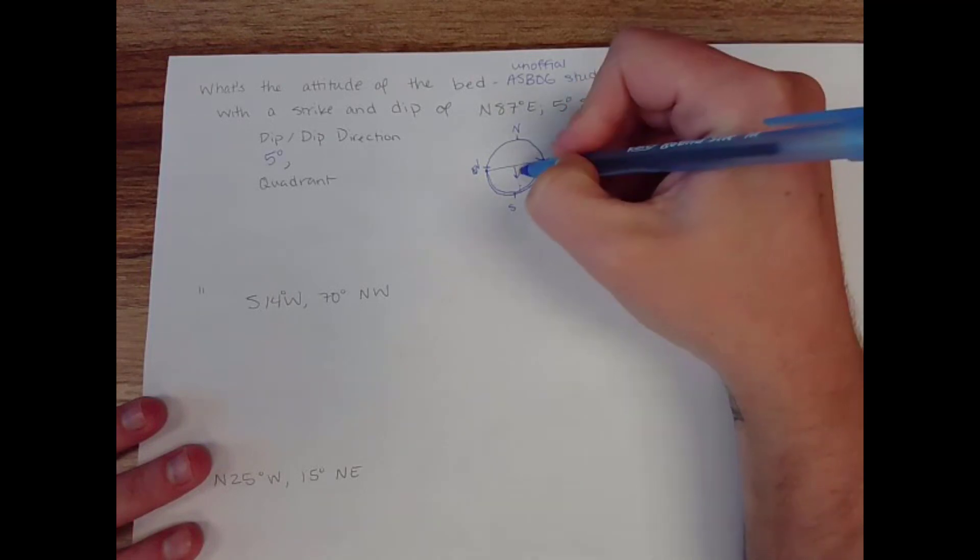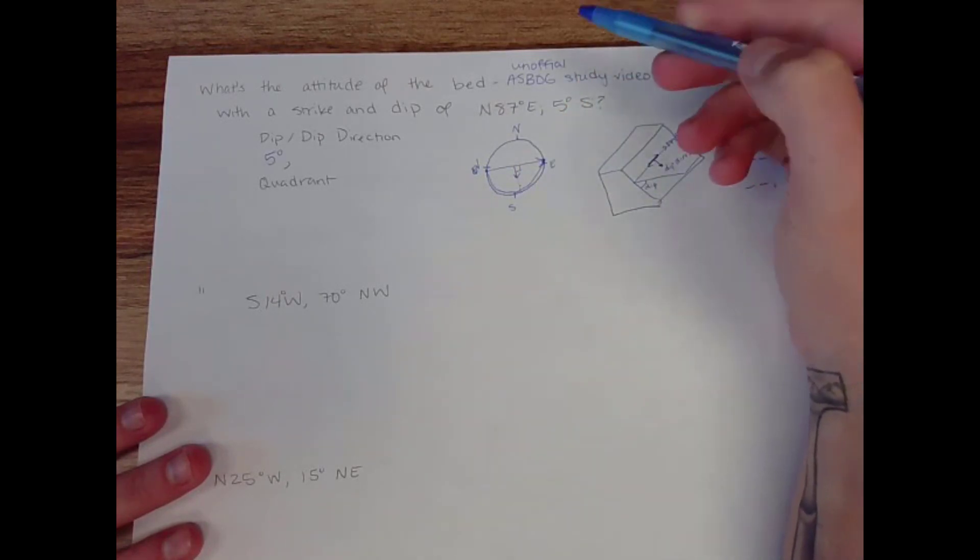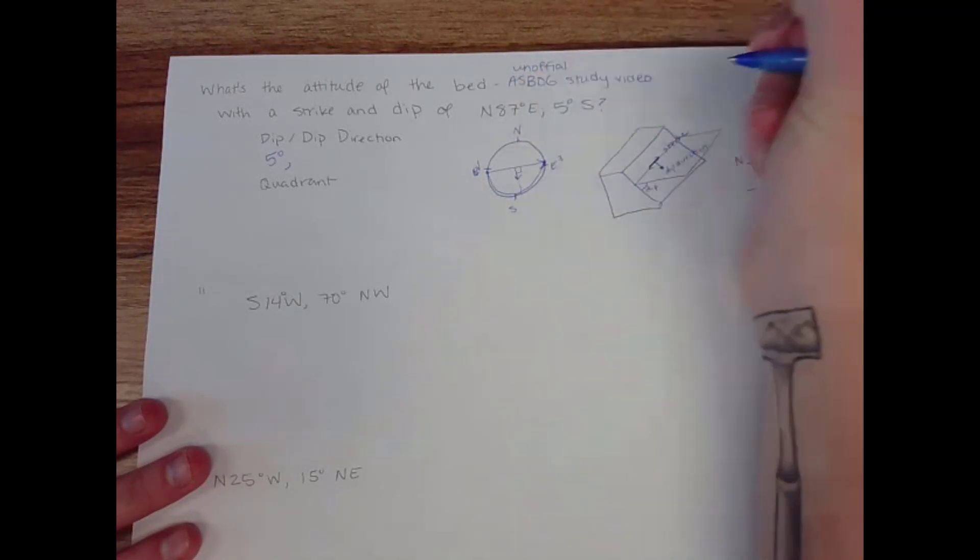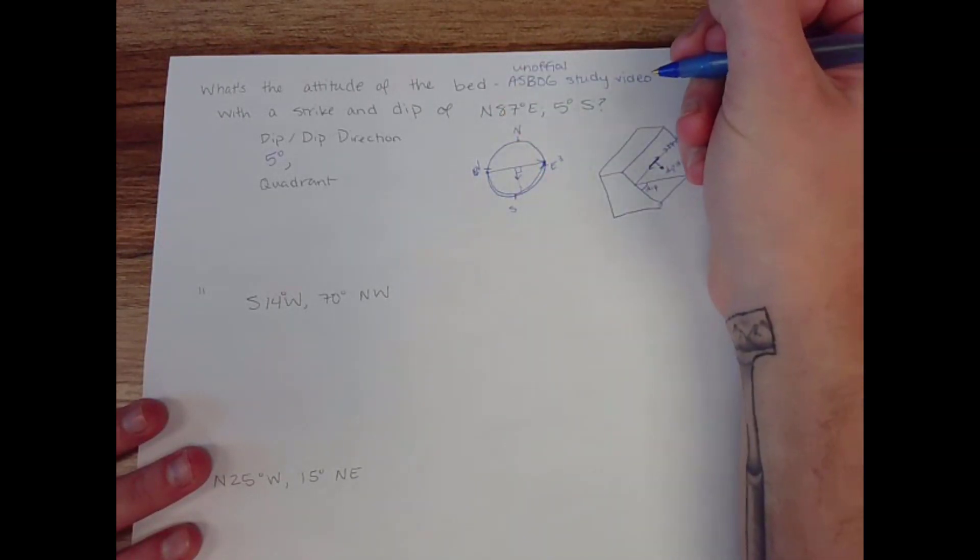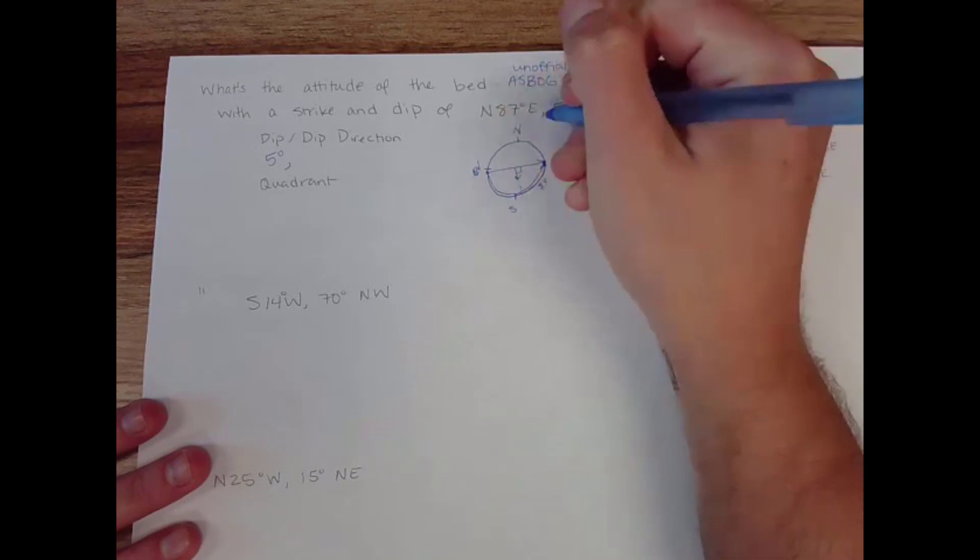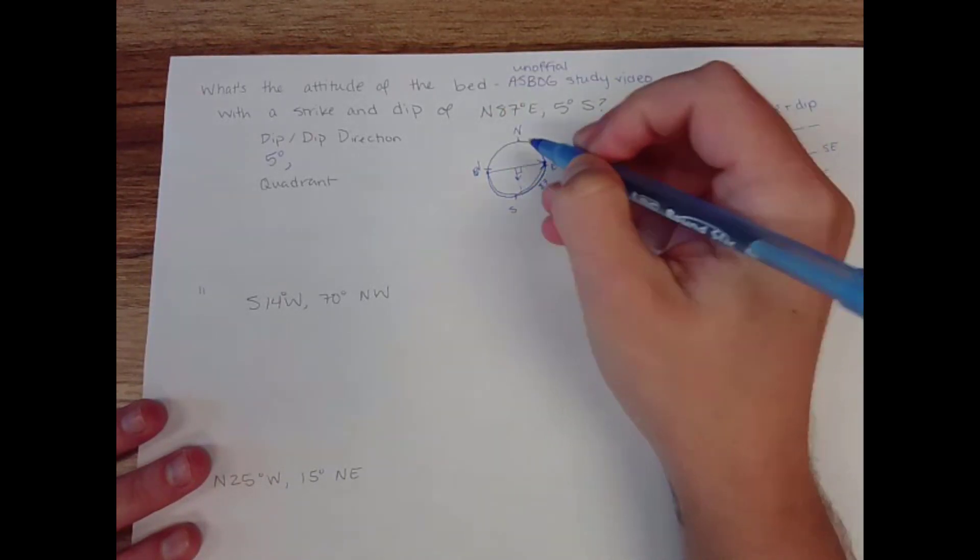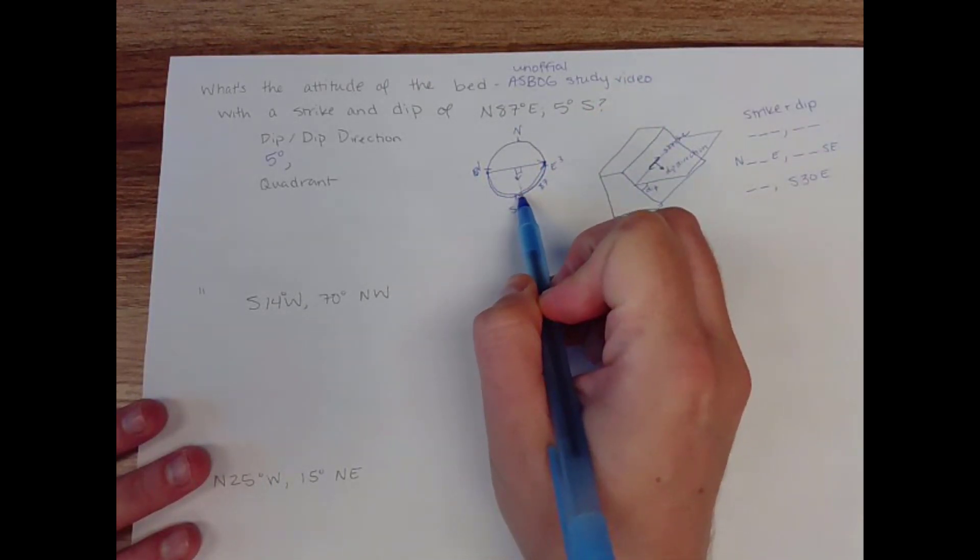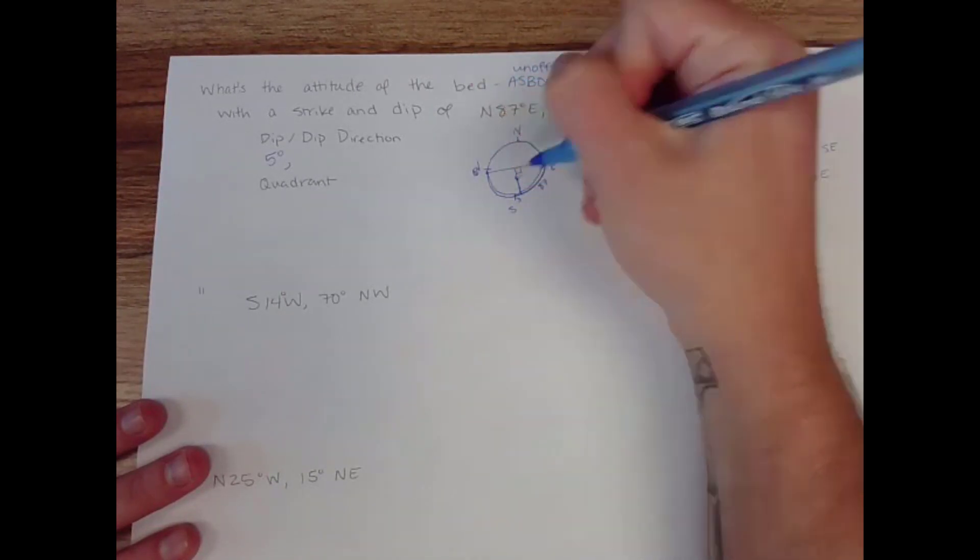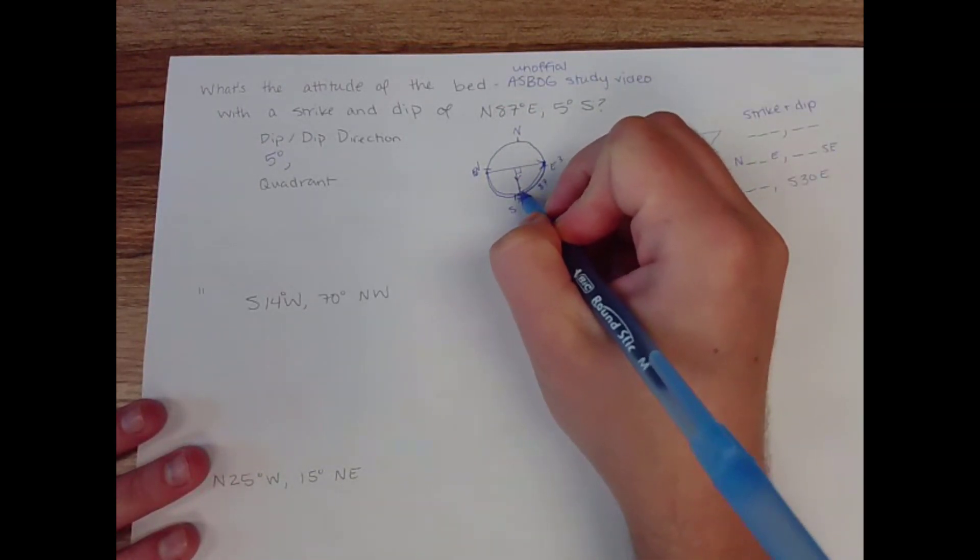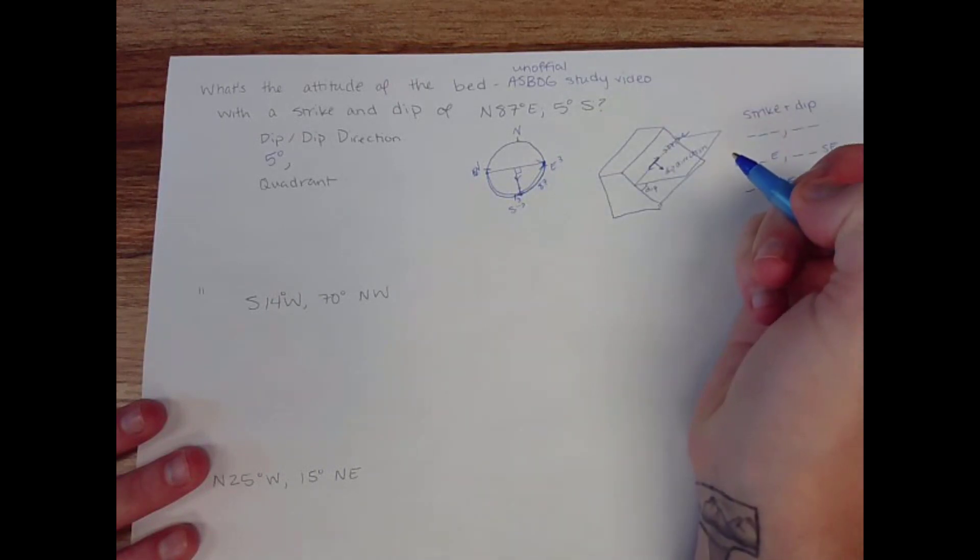So if we go from north 87 east, and we want to sweep around 90 degrees, there's three degrees here between this arrow and east. And then there's going to be another 87 degrees right here, moving down toward the south. And then there's going to be a little three degree gap right here between south and where that arrow would land if we imagined extending the dip direction out. So that means that this dip direction is south 3 east.